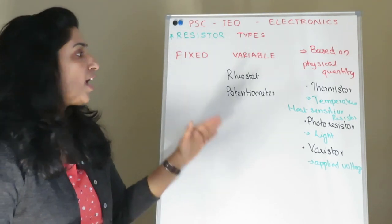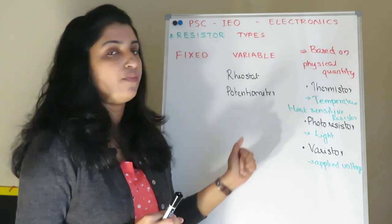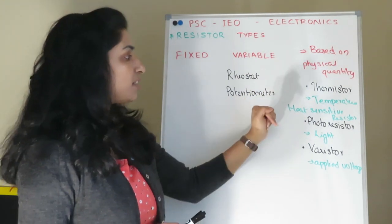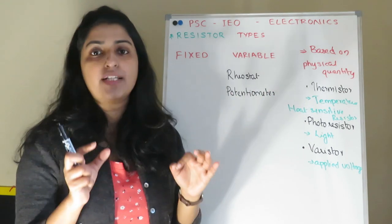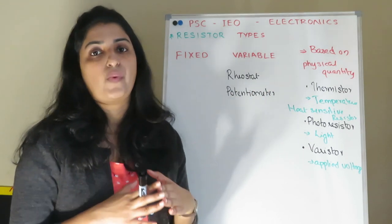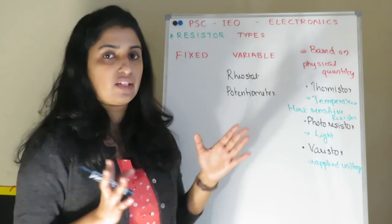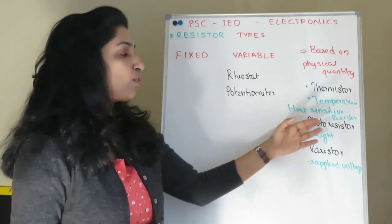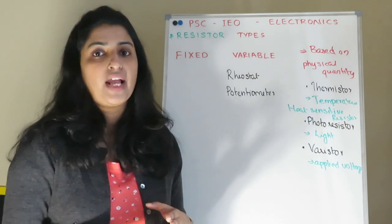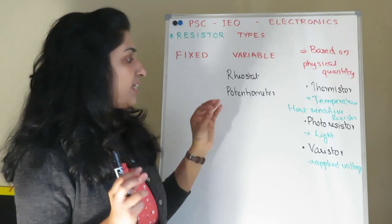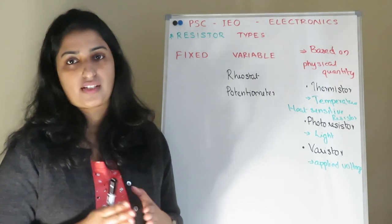Next, variable resistors. There are the thermistor, photoresistor, and varistor. The thermistor is a heat-sensitive resistor — its resistance changes with temperature. The photoresistor depends on light intensity; the resistance value changes with the light intensity.